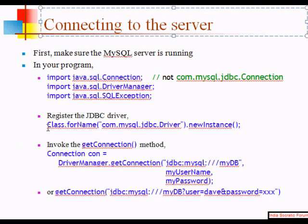Register the JDBC driver using new instance. Then invoke the getConnection method: DriverManager.getConnection(). A connection is established and assigned to the variable 'con', which is of type Connection. This is a standard call: jdbc:mysql, MyDB, then username and password to the database. That's it — you get a connection established.